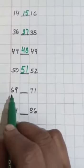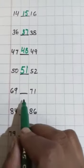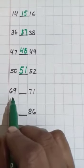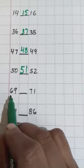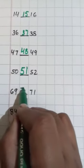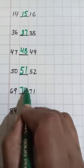69-71. Which number is comes in between 69 and 71? Yes, 70.